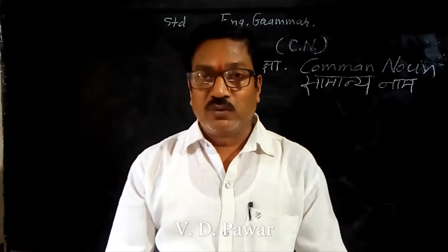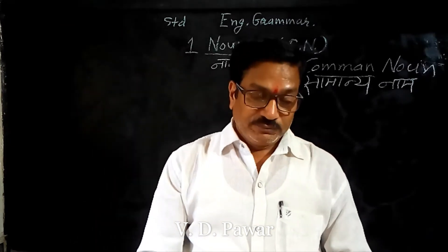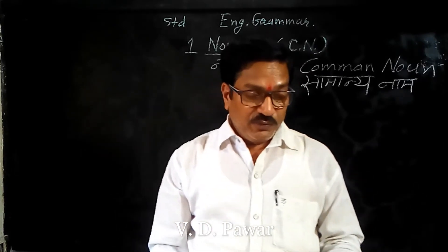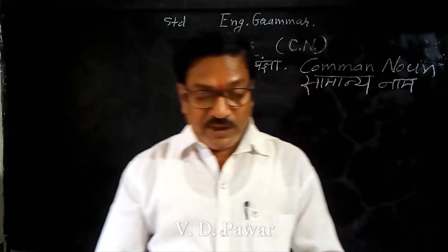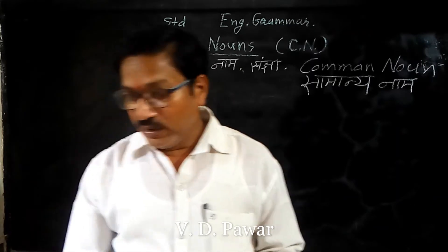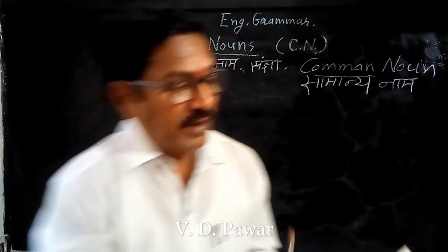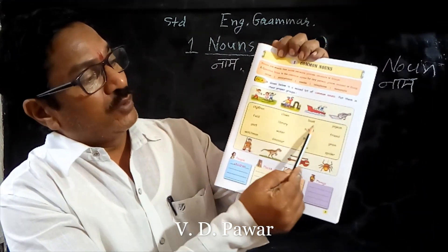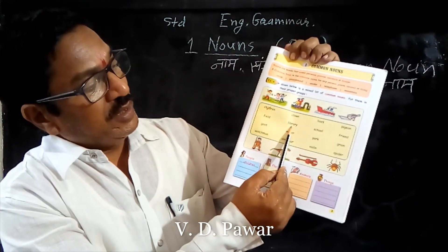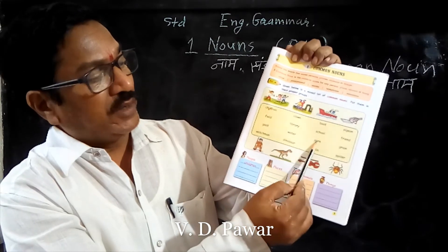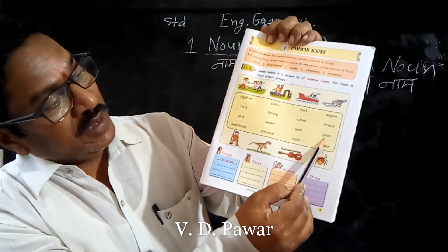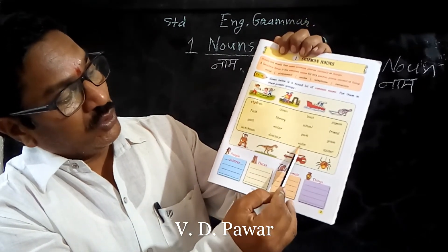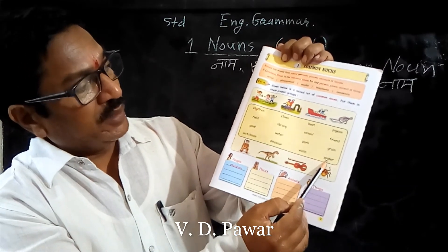अब मैं आपको कुछ उदाहरण देता हूँ Common Noun के: children, clone, boat, pigeon, field, library, school, friend, goat, water, park, grain, watchman, dinosaur, violin, spider — यह सब Common Nouns के उदाहरण हैं।